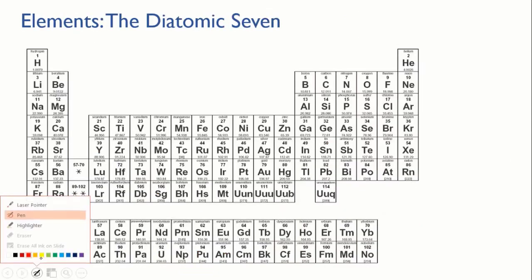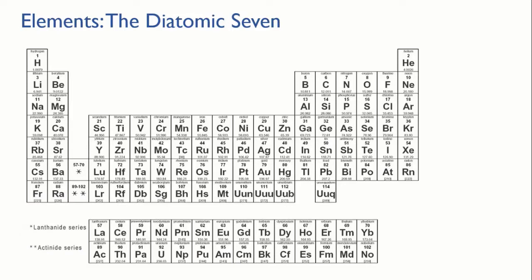One last thing to look at before we finish up here. For most elements, we can assume that they're made from single individual atoms. So when you write down the formula for sodium, it's simply Na, meaning a single Na atom. And if you write the formula for helium, it's He, one helium atom.